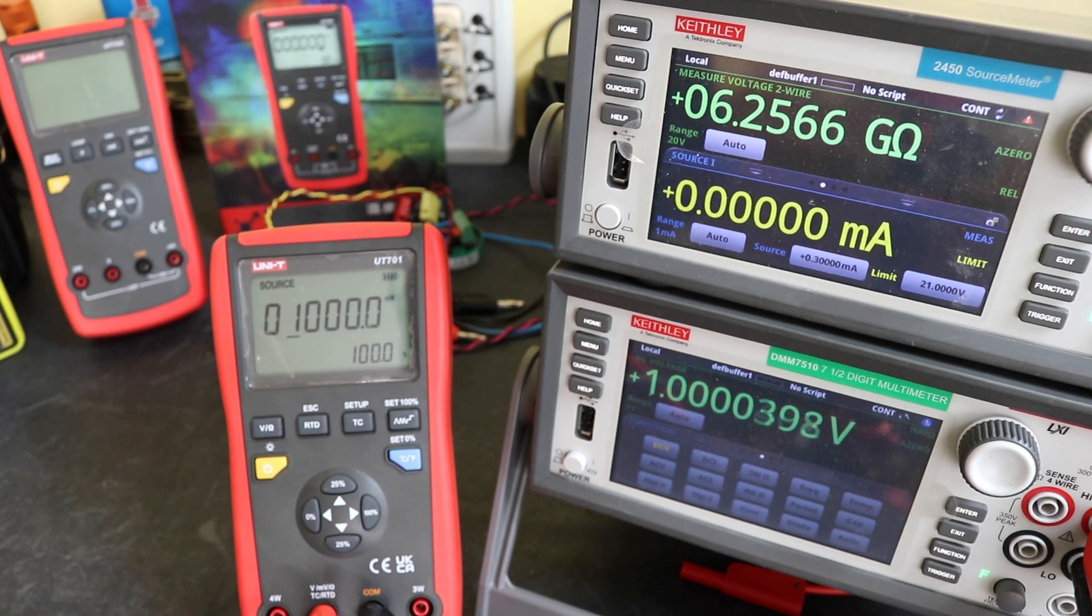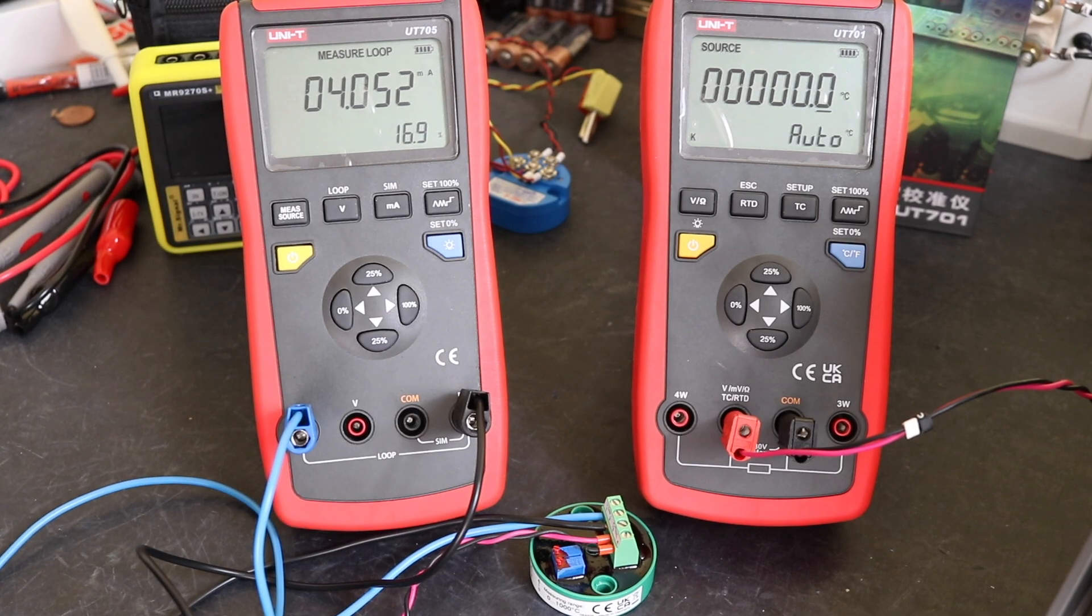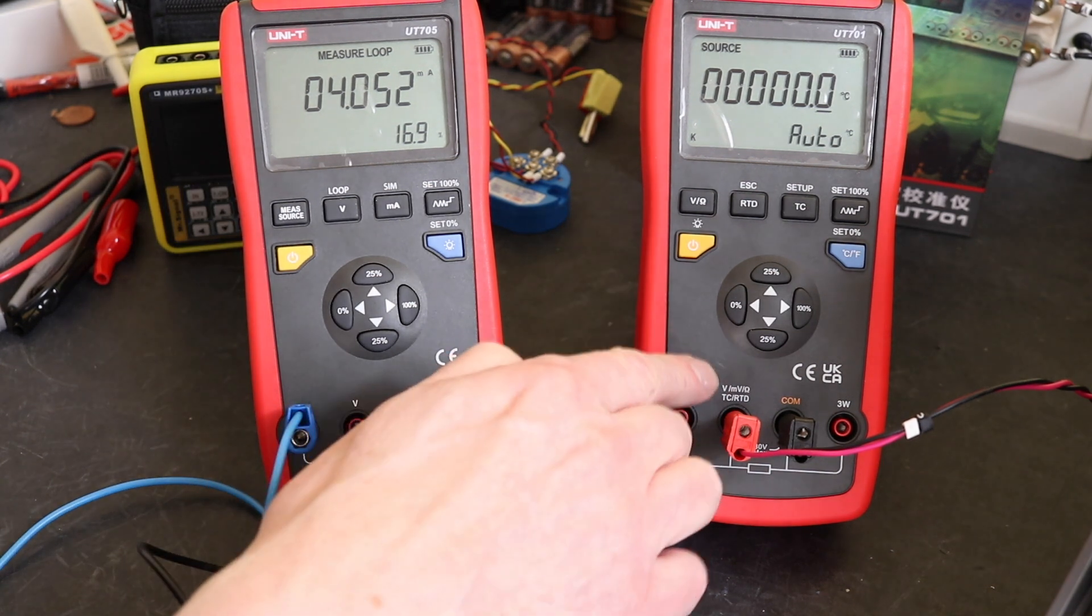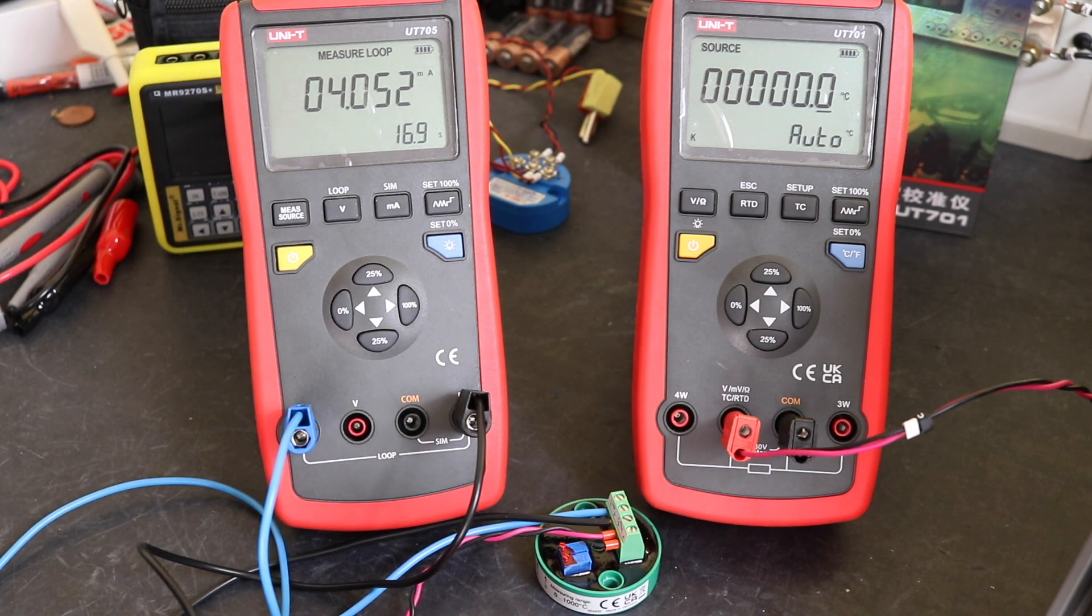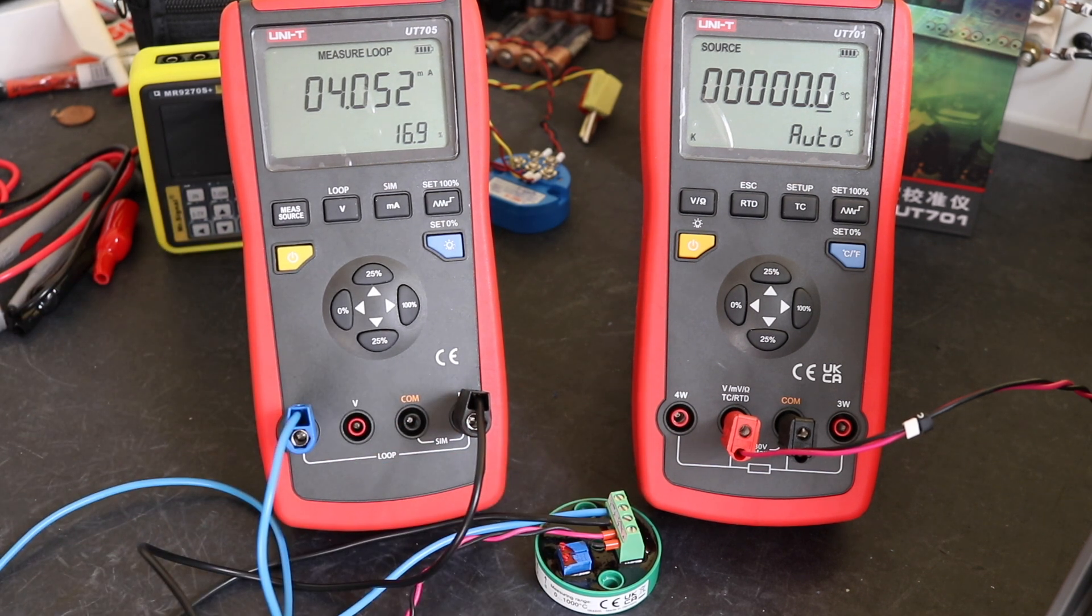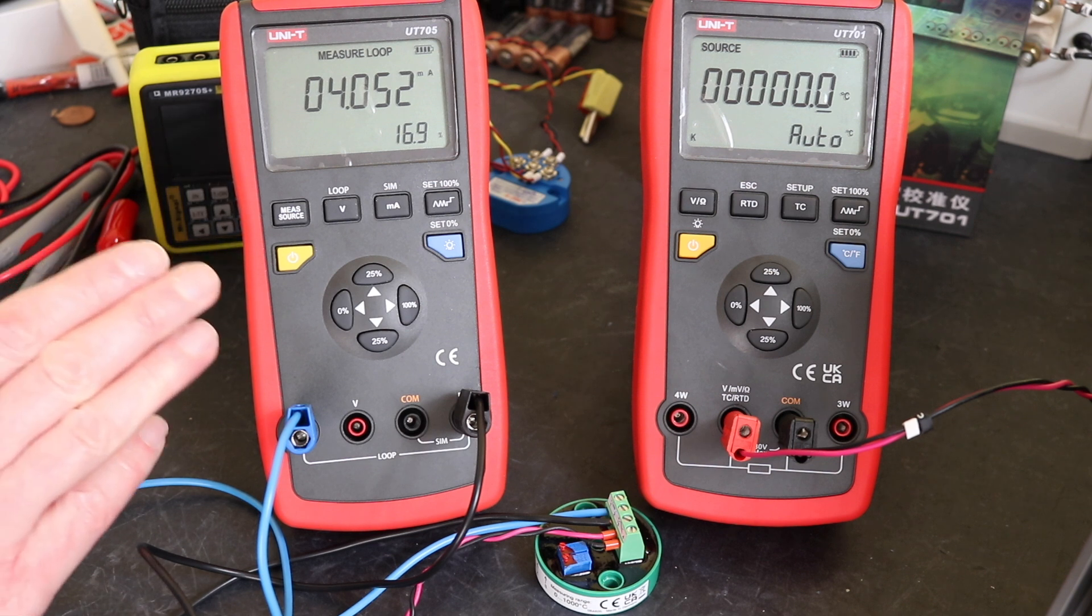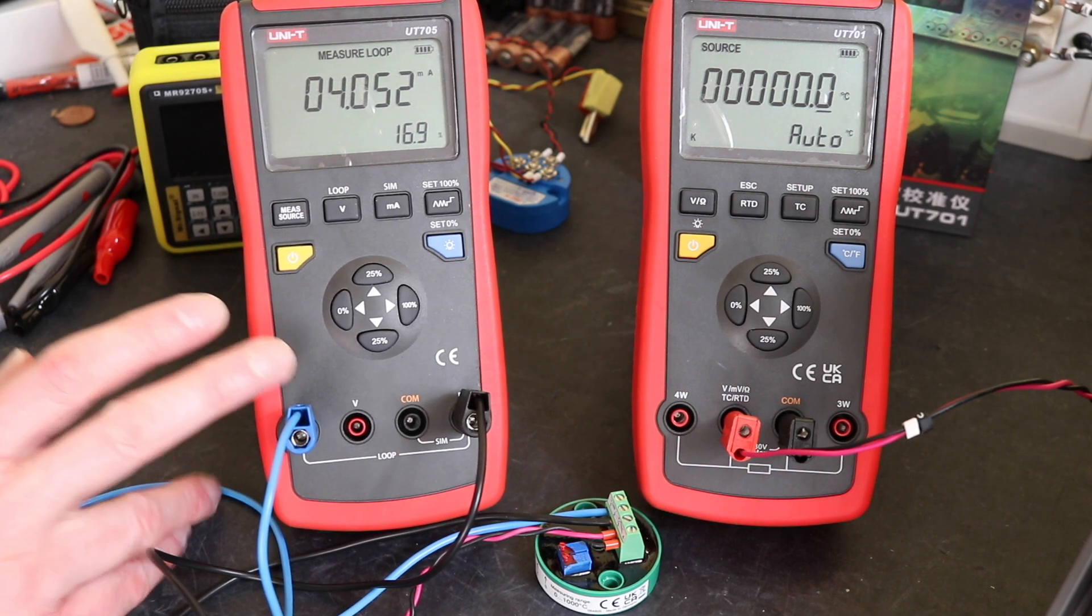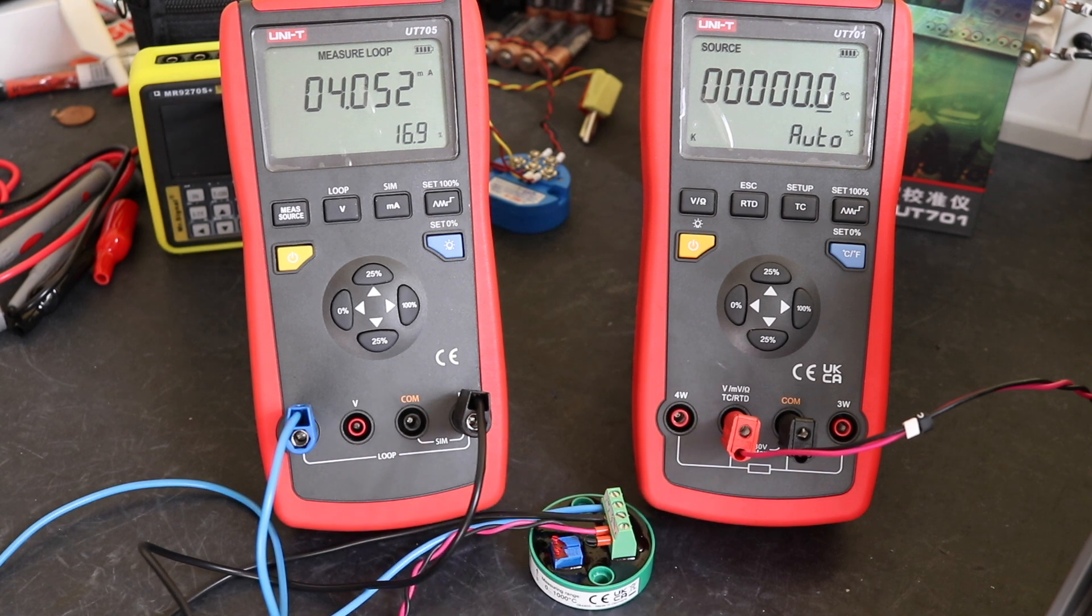So we've set our little transmitter up here. This is a K-type transmitter 0 to 1000 degrees range. So it matches the current settings up on our 701 here. We are using the 705 to measure the loop current and supply the 24 volts that is needed to power this. And we are reading 4.052 milliamps here. A little bit out at this bottom end. That could be this unit. It could be the UT701. I'm introducing another issue into the accuracy equation here. So just to be careful with that. But when I do test this with my reference kit, there's only about 0.02 percent in accuracy on our transmitter. So that's all fine.